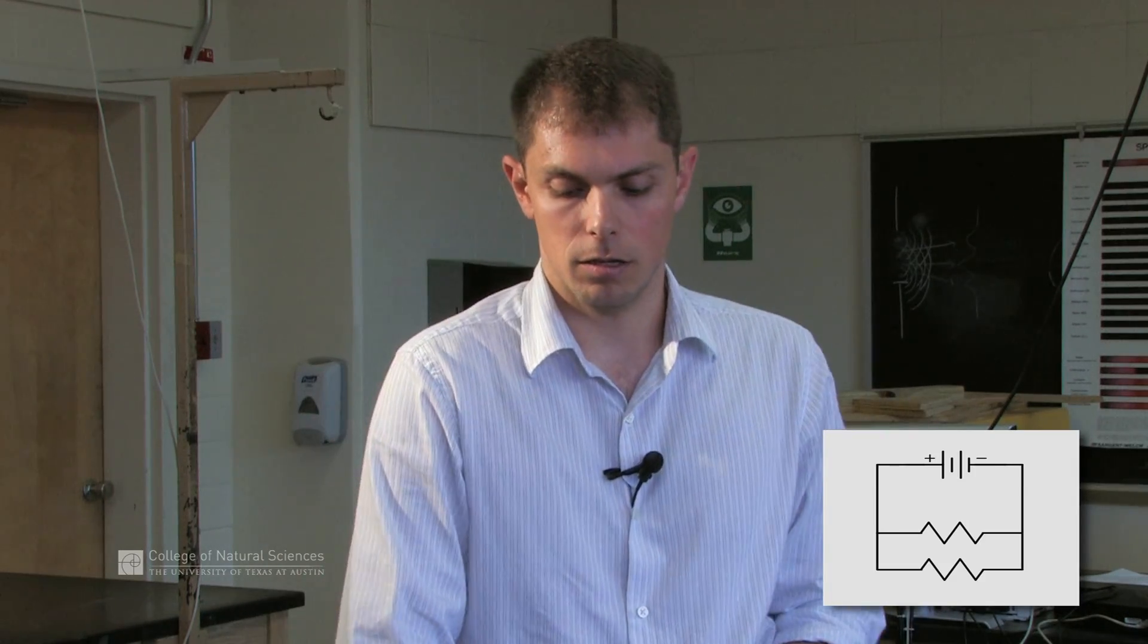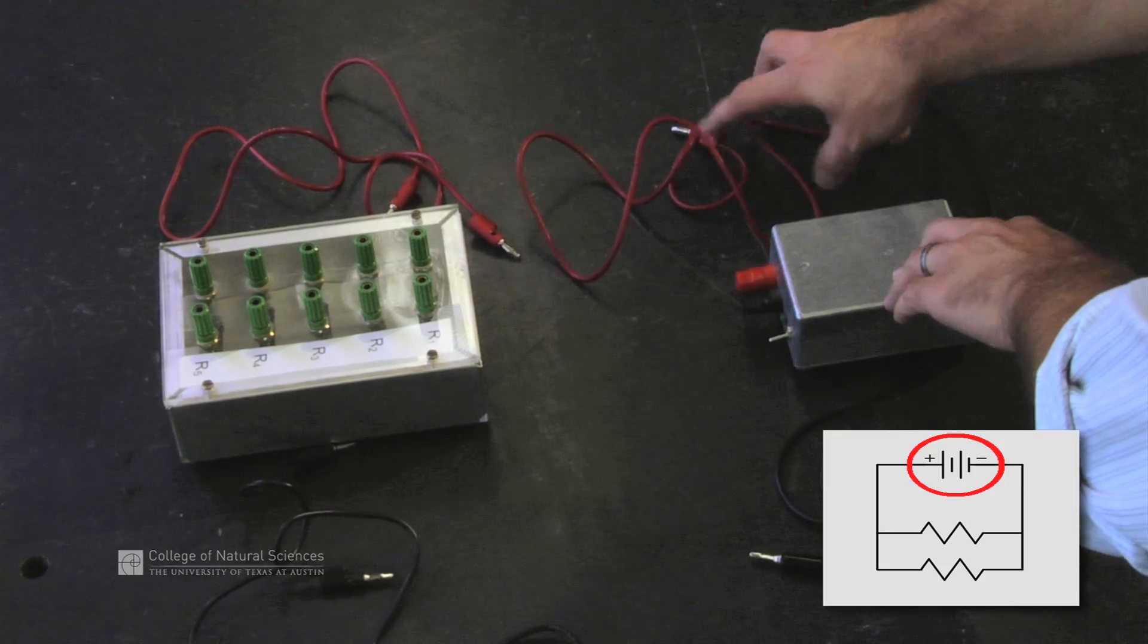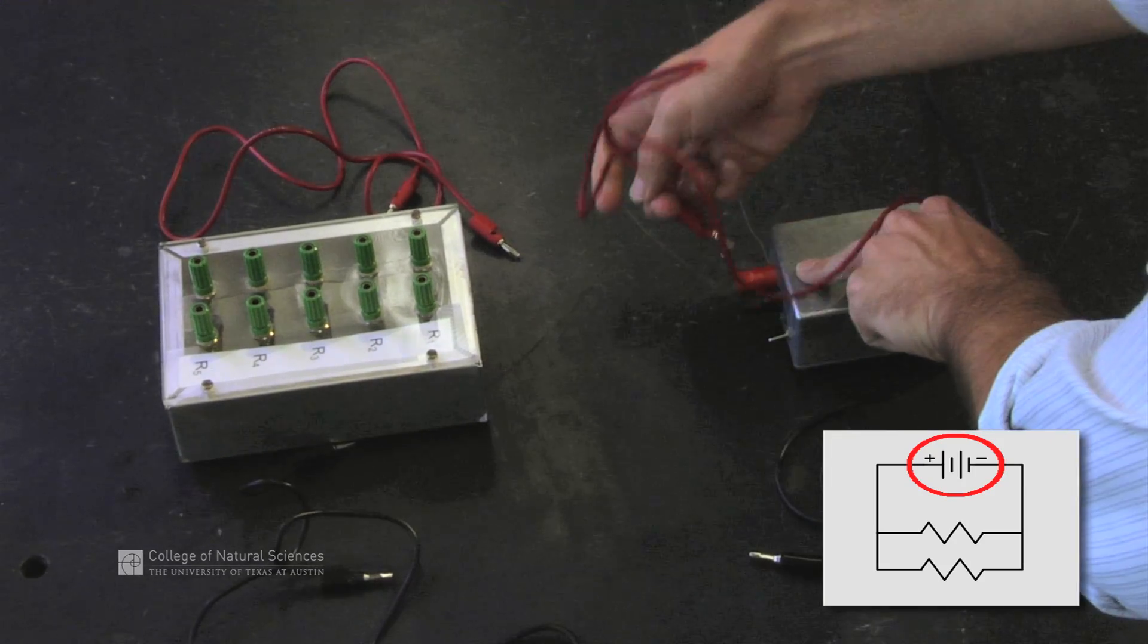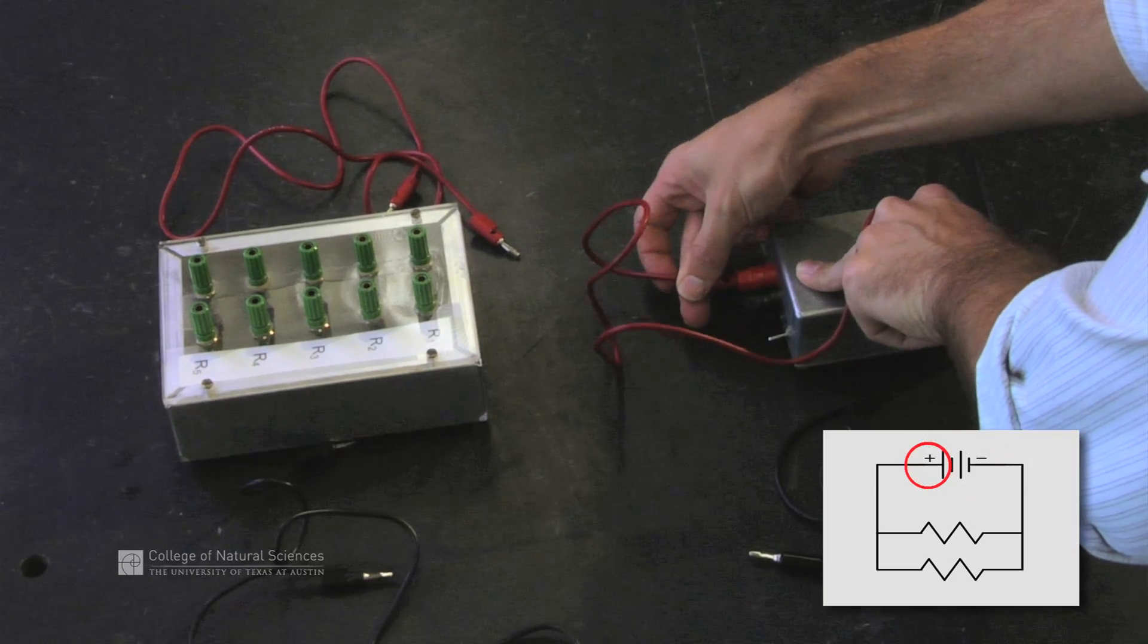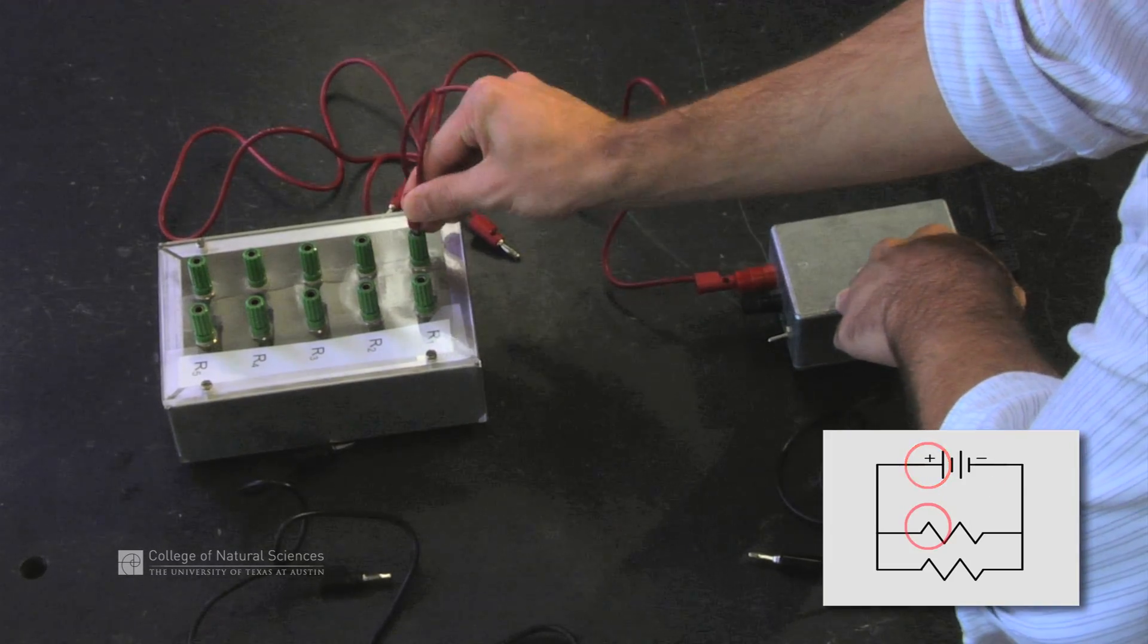In order to set up this circuit, again, make sure our power supply is plugged in. We start with our first wire connected to the positive terminal. From that first wire, we connect our first resistor.